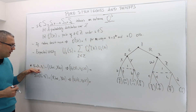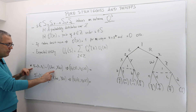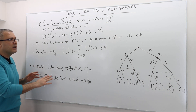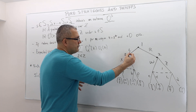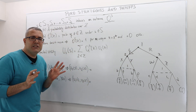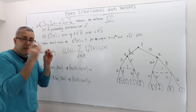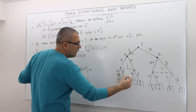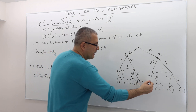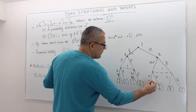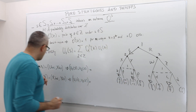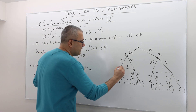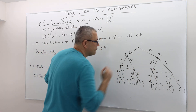What if the strategy profile is: player one plays LBC and player two plays XW? Player one is playing L here, then B here, and C here. It's always easier to put arrows on the game tree. Player two is playing X here and W here.